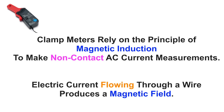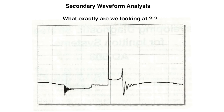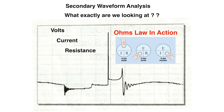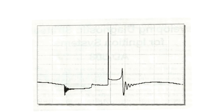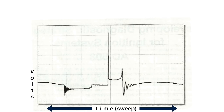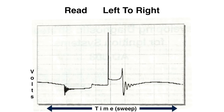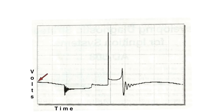In secondary waveform analysis, we're looking at Ohm's law in action — volts, current, and resistance. This is a known good pattern; this is what it should look like. On the left side we always have our voltage going up and down, and on the bottom is our sweep or time span. We always read left to right. Starting left to right, the first place we start at this red arrow on the left indicates system voltage — somewhere around 12.6 or 14.6 if the battery is good.